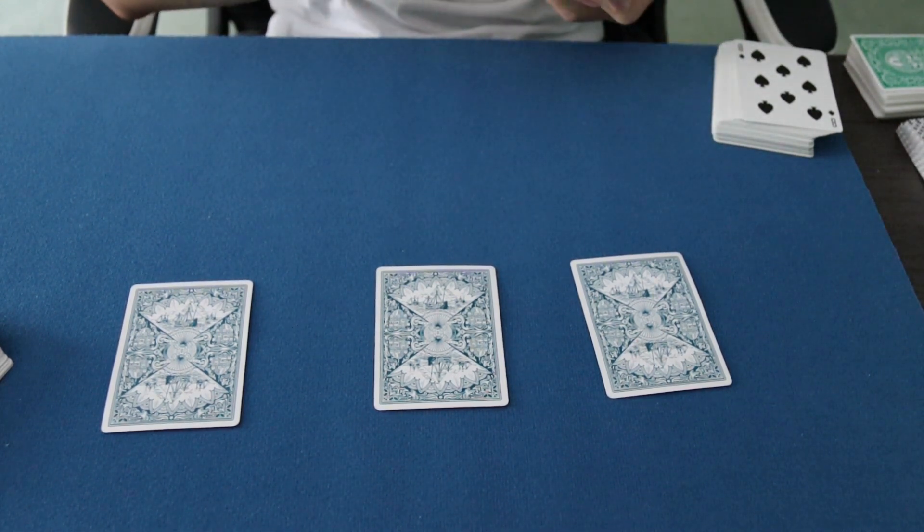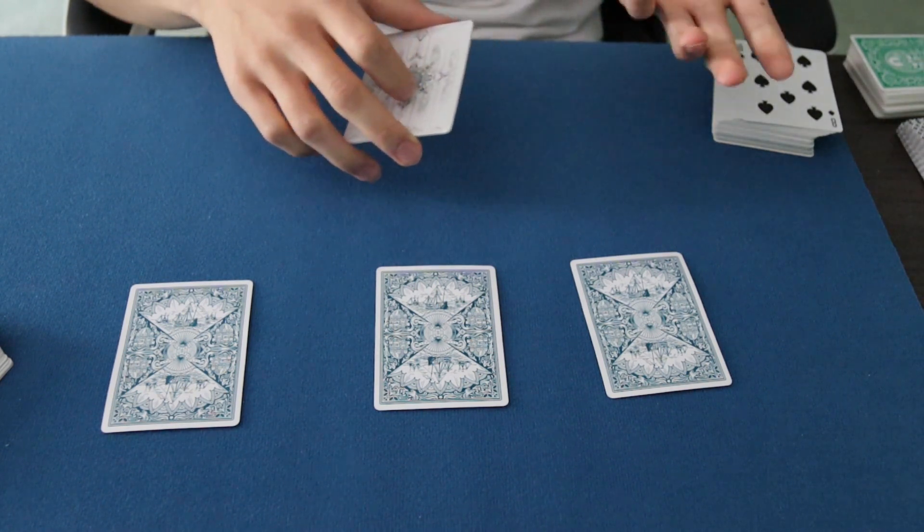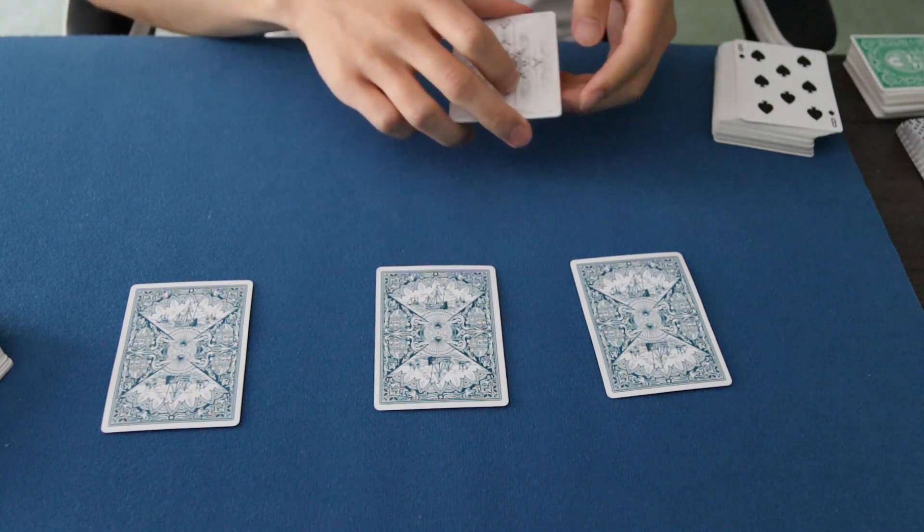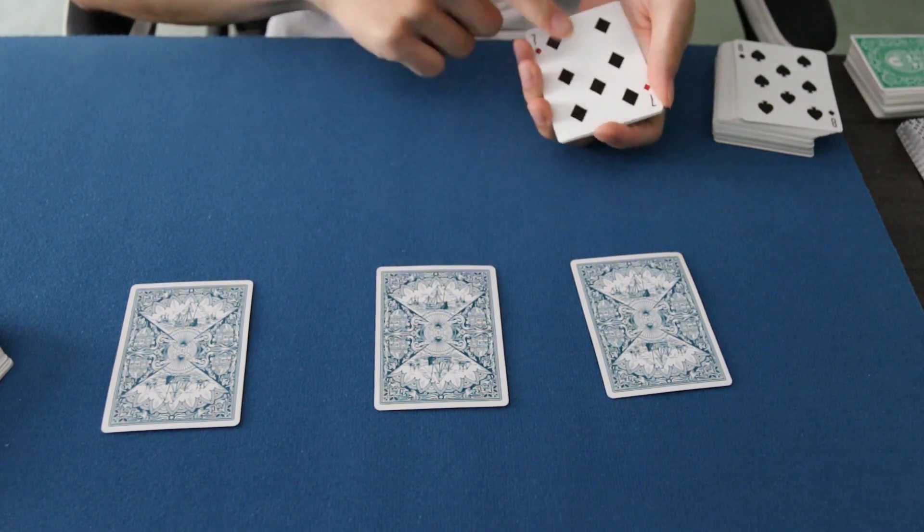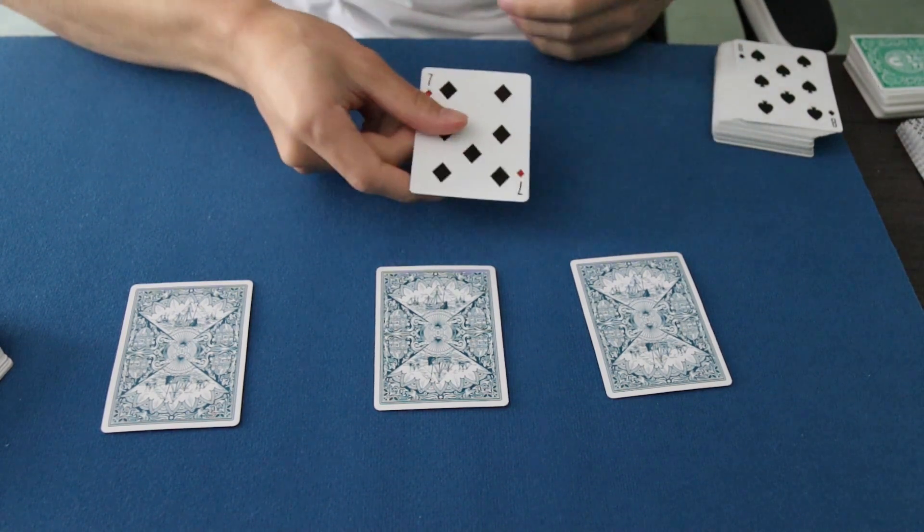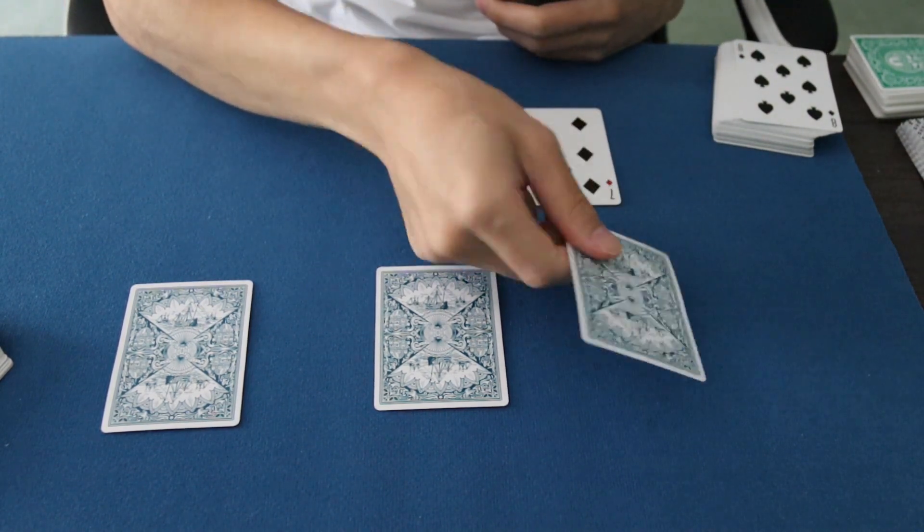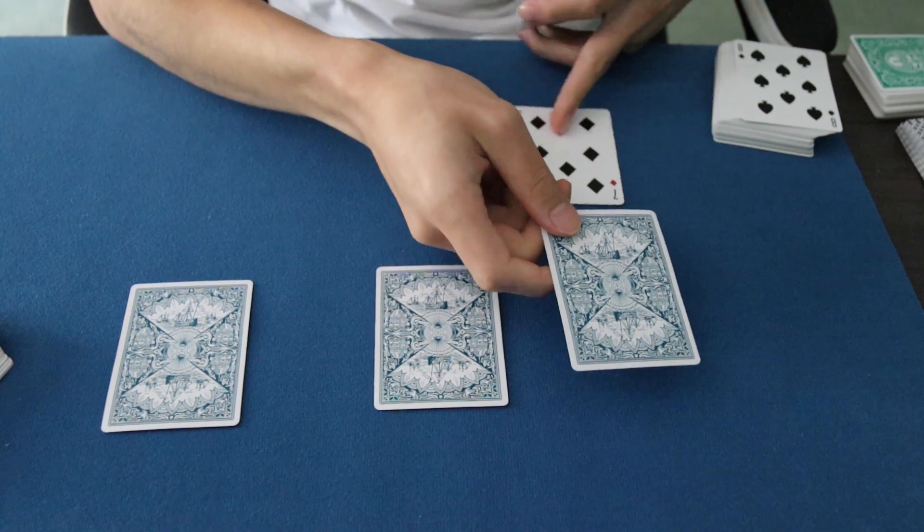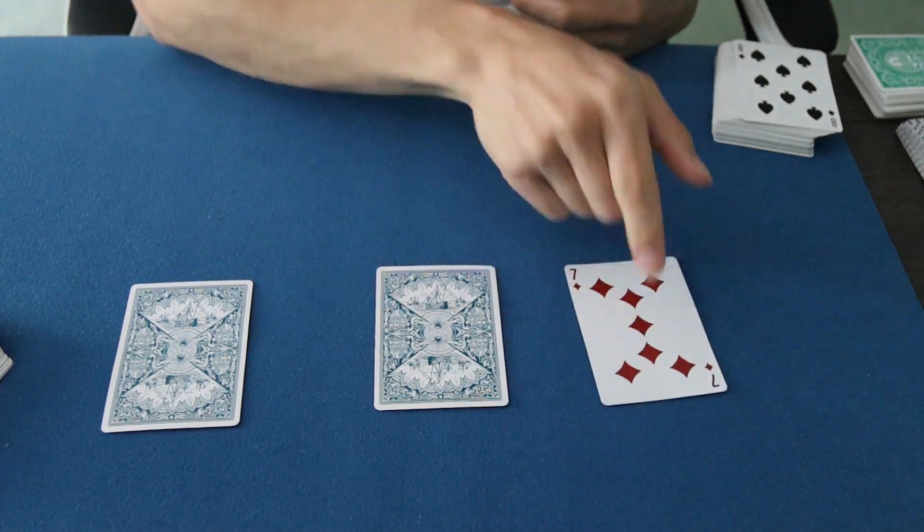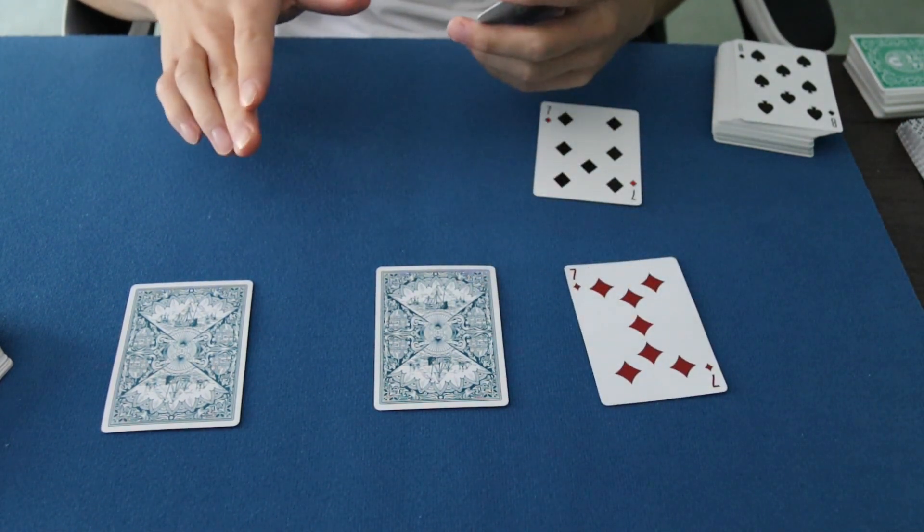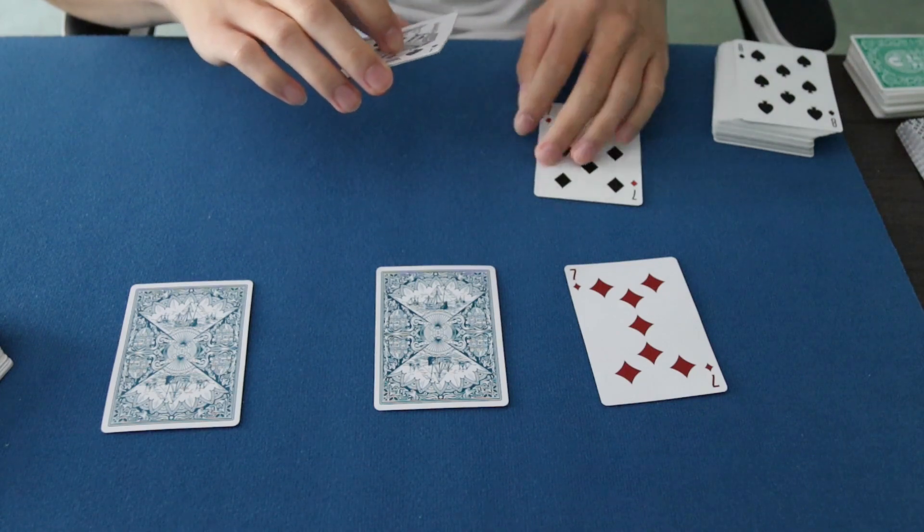So the first card that I actually selected was the seven of diamonds—it's right over here. And the card that you actually predicted for this first card was the seven of diamonds as well. The second card that I selected was the jack of spades over here, which is another perfect prediction as well.